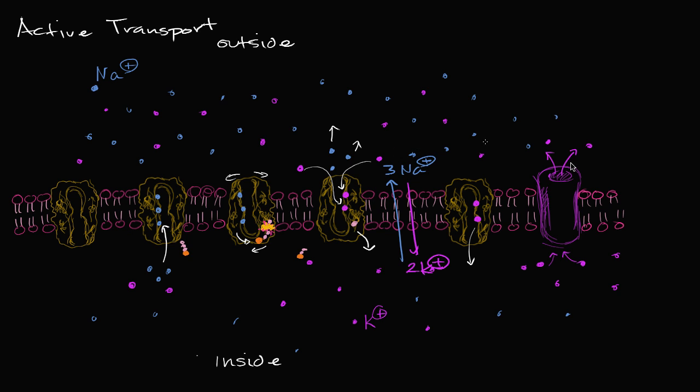What really sets that up is that you actually have channel proteins that allow potassium ions to diffuse down their concentration gradient. So let's think about what happens. Because of the sodium-potassium pump, what is sodium's concentration gradient? Well, it has a higher concentration on the outside and a lower concentration on the inside. What is potassium's concentration gradient? Well, potassium is getting pumped in from the outside into the cell. So potassium has the opposite concentration gradient. It has a high concentration inside and a low concentration outside.